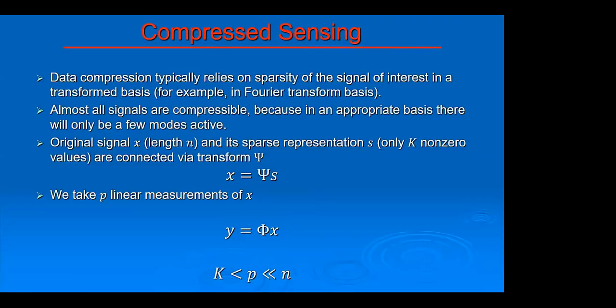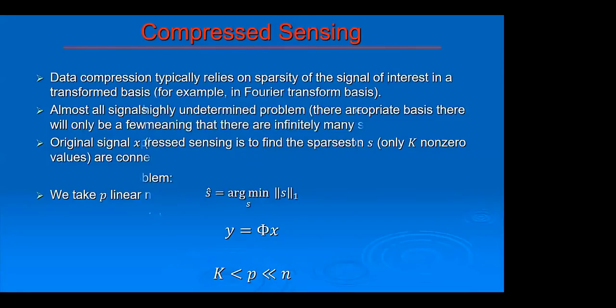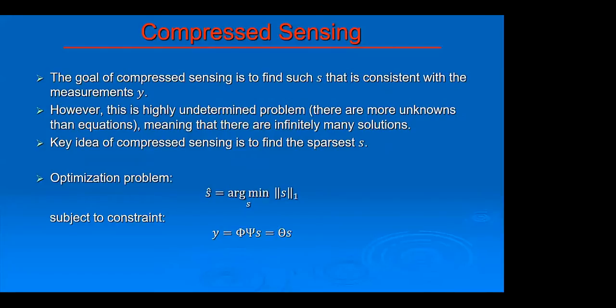The idea is to take p measurements, where p is much smaller than the original length of the signal. Although this might seem as an underdetermined problem because we have many unknowns and very few equations, if we rephrase this as a problem of minimization, then it's possible to solve this. We want to find s that is as sparse as possible while still satisfying the constraints. That's the key idea of compressed sensing.